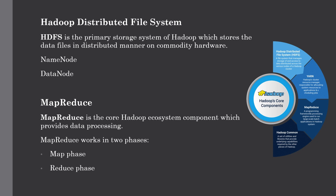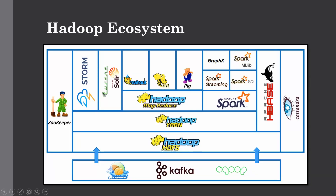MapReduce basically has two phases: the Map phase and the Reduce phase. The Map phase takes a set of data and converts it into another set of data where the individual elements are broken down into tuples of key-value pairs. The Reduce function takes the output of the Map phase, applies some aggregation, and writes the output to HDFS. HDFS stores all the data and MapReduce acts as the processing layer which processes the data stored in HDFS.